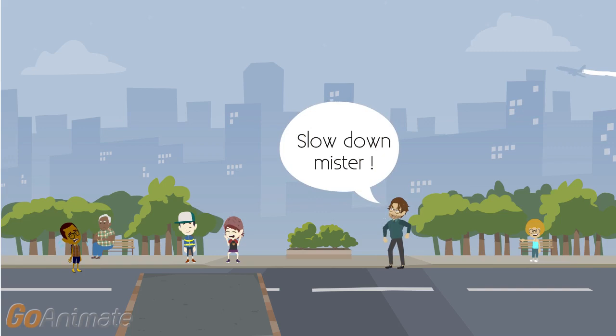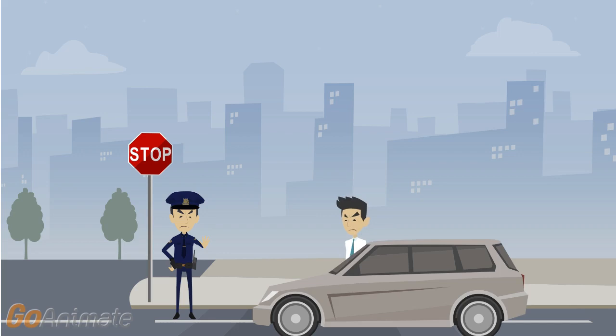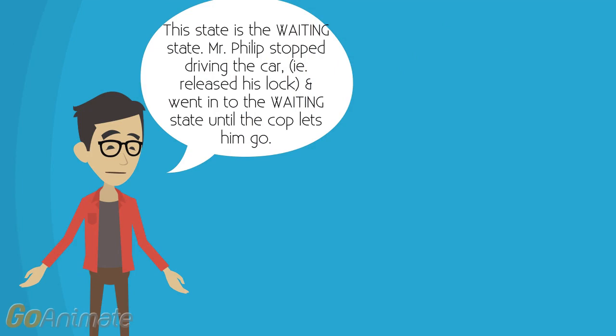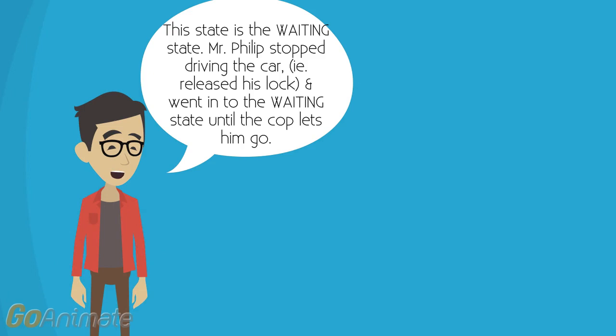Slow down, Mr. Philip — I think he's going way too fast. Stop the vehicle! You crossed the speed limit; I will have to charge you for speeding. Oh no! This state is the waiting state. Mr. Philip stopped driving the car — that is, he released his lock — and went into the waiting state until the cop lets him go.